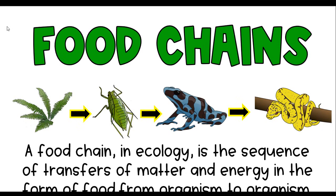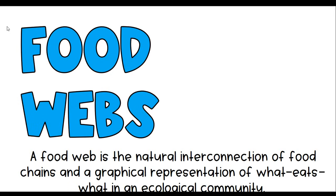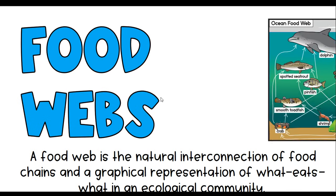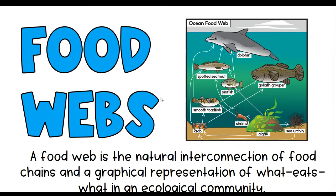However, we know that in most ecosystems — let's say for instance the python — the python might eat multiple things in that food web, and it does in real life. So a food web shows more of those feeding relationships. It's the natural interconnection of food chains and a graphical representation of what eats what in an ecological community. This is a more realistic picture of all the organisms in an ecosystem that are all competing with each other for food, meaning there's a limited amount of prey and they're all fighting for the same resources in that given ecosystem.